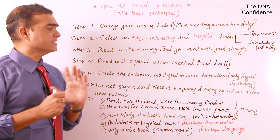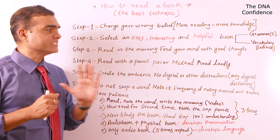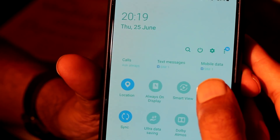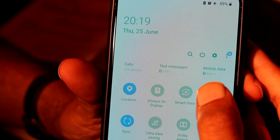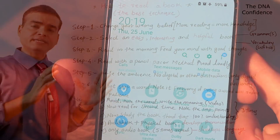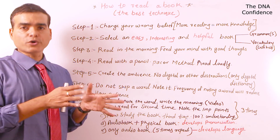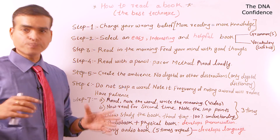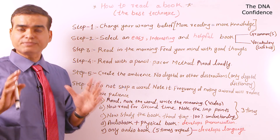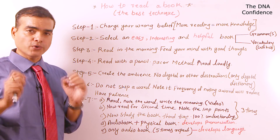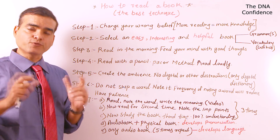Create the right ambience — no digital distractions. Switch off your mobile phone and switch off everything. Only keep your digital dictionary on, which you will need. Keep this in mind and then you are ready for reading.